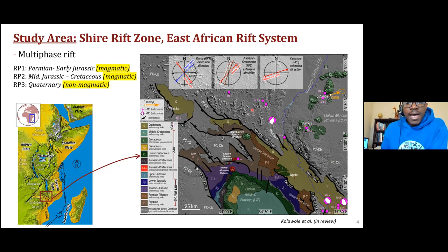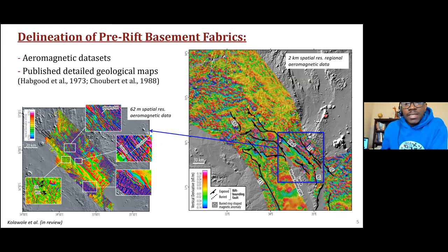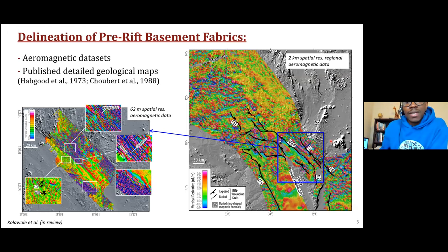The pre-rift basement, shown in gray and labeled PCCB, is dominated by pre-Cambrian gneisses and granulites. The colored polygons represent the outcrops of syn-rift sedimentary, volcanic, and intrusive igneous rocks. For our study, in order to delineate the basement fabrics, we used two aeromagnetic datasets: one is a regional lower-resolution aeromag covering both the rifts and surrounding areas, and the second is a higher-resolution aeromagnetic dataset acquired by the Geological Survey of Malawi in the northeastern part of the basin. These aeromagnetic datasets provide very nice imaging of the trends of basement fabrics, as signals penetrate the weathered basement and sedimentary cover.